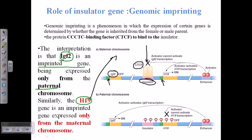If we look at the paternal chromosome, we again have both IGF2 as well as H19, and again we have an insulator in the middle. There is also an enhancer further downstream of both genes, so this enhancer can bind with the promoter of H19 as well as the promoter of IGF2. However, there is an insulator which is methylated, and because it is methylated and bound with some proteins, this enhancer region cannot be brought close together with that part. In the maternal case, the insulator is bound with protein CTCF.